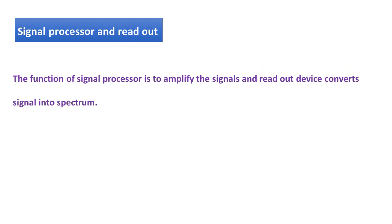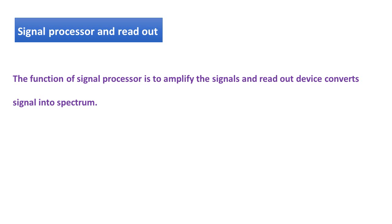And then finally, signal processor and readout. The function of signal processor is to amplify the signals and readout device converts signals into the spectrum, XPS spectrum.